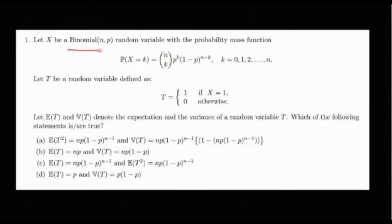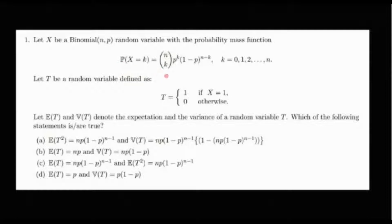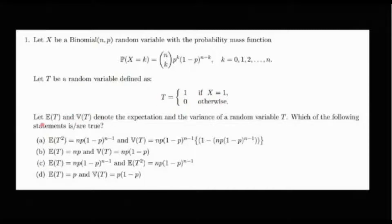Let X be a Binomial(n, p) random variable with PMF: P(X = k) = C(n,k) · p^k · (1−p)^(n−k), for k = 0, 1, 2, ..., n. Let T be a random variable defined as T = 1 if X = 1, and T = 0 otherwise. Let E(T) and V(T) denote the expectation and variance of T. We need to check which statements are true.